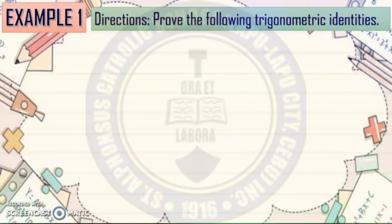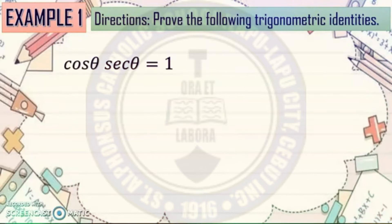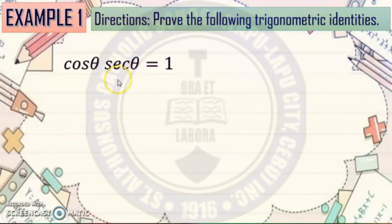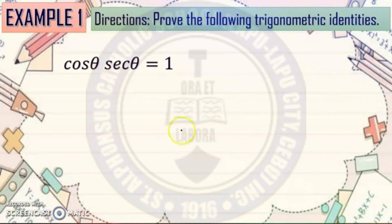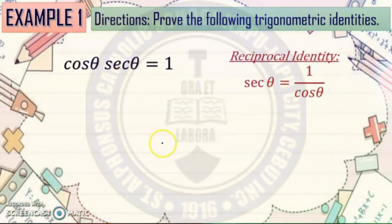Example 1 — directions: prove the following trigonometric identities. Cosine theta times secant theta equals 1. So basically, class, what are we going to do here? We're going to prove that cosine theta and secant theta is equal to 1. So first thing you're going to do is decide which side of the equation you're going to transform, so that they will be equal. For this, we're going to use the reciprocal identity of secant theta.